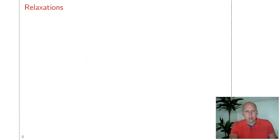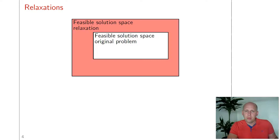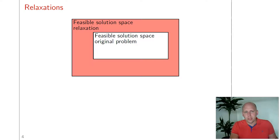In a bit more detail: we have the original problem, which has a certain feasible solution space. If we remove part of the constraints of the original problem, then we get a broader feasible solution space. So the feasible solution space of the original problem is always contained in the feasible solution space of the relaxation. It is often possible to remove constraints in such a way that the problem becomes easier to solve, which is what we want when using relaxation.